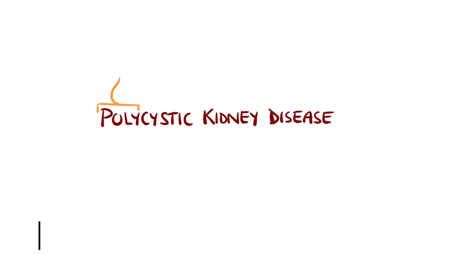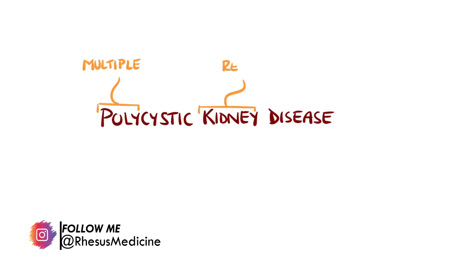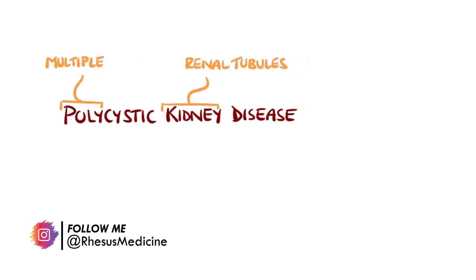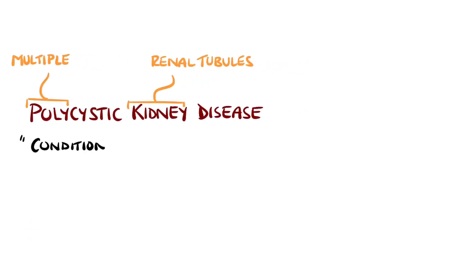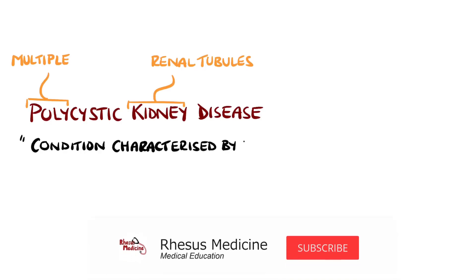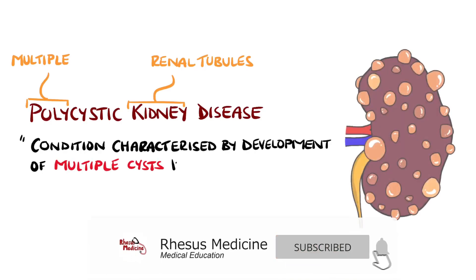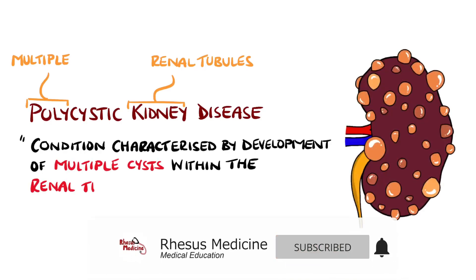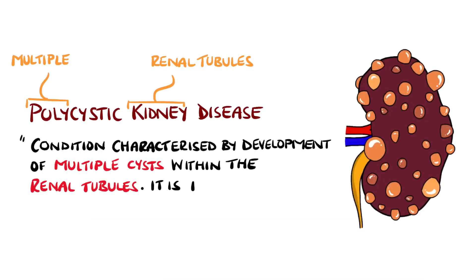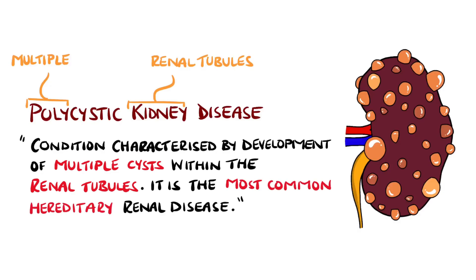Polycystic kidney disease is a condition characterised by the development of multiple cysts within the renal tubules of the kidney, and is the most common hereditary renal disease.